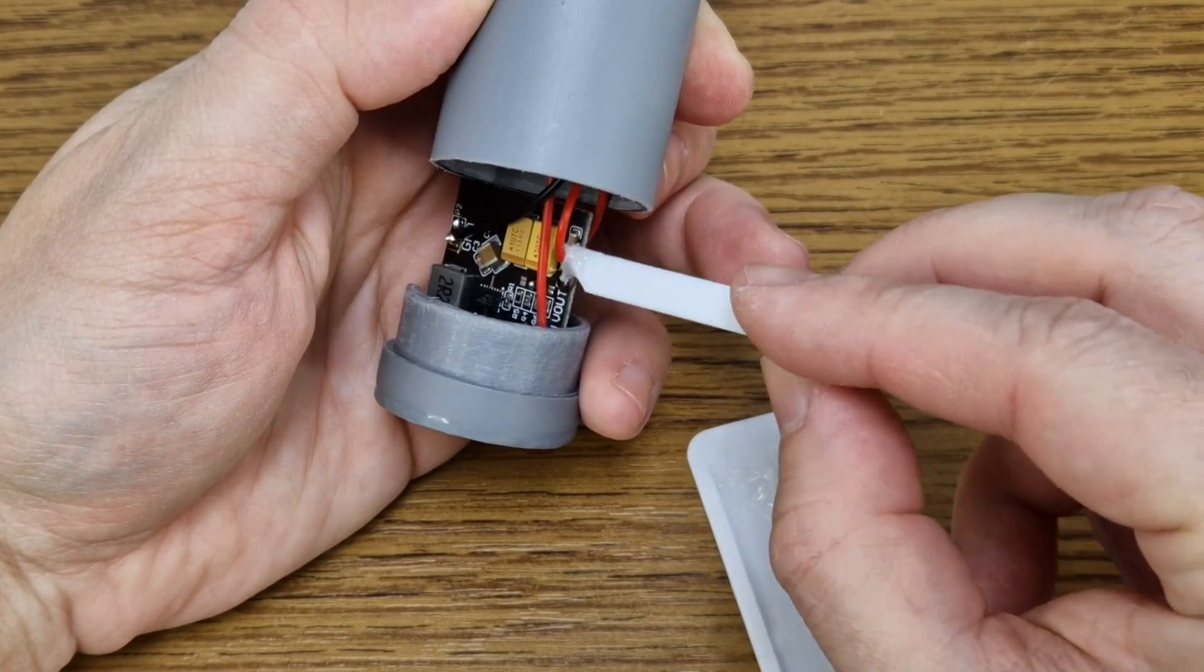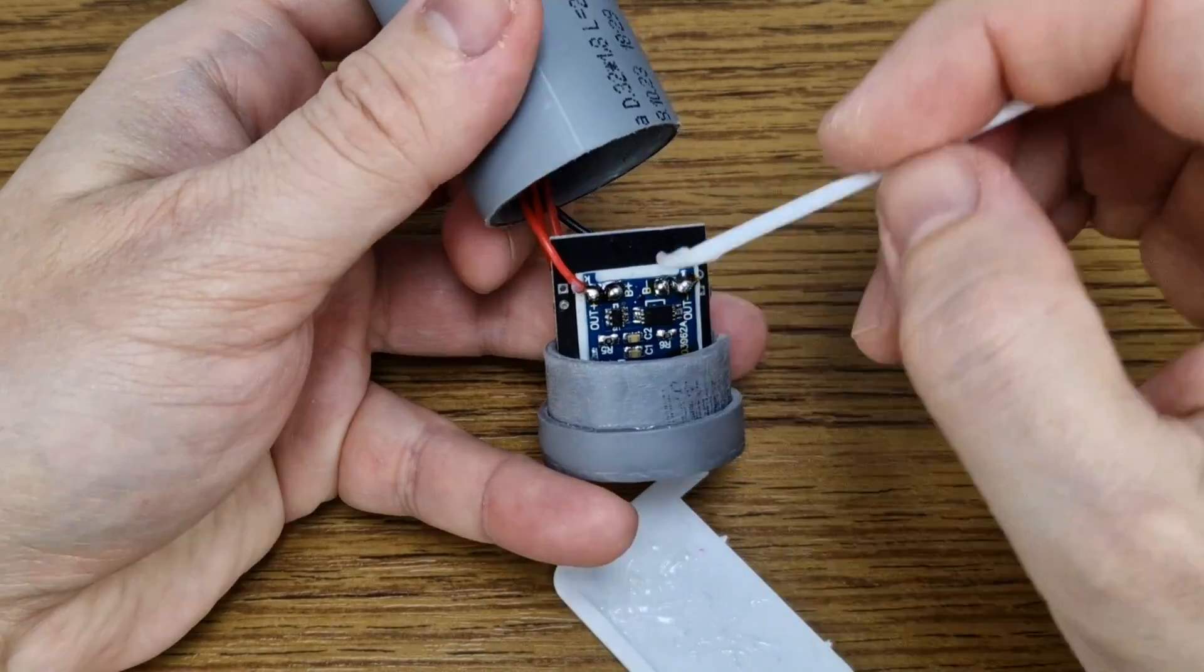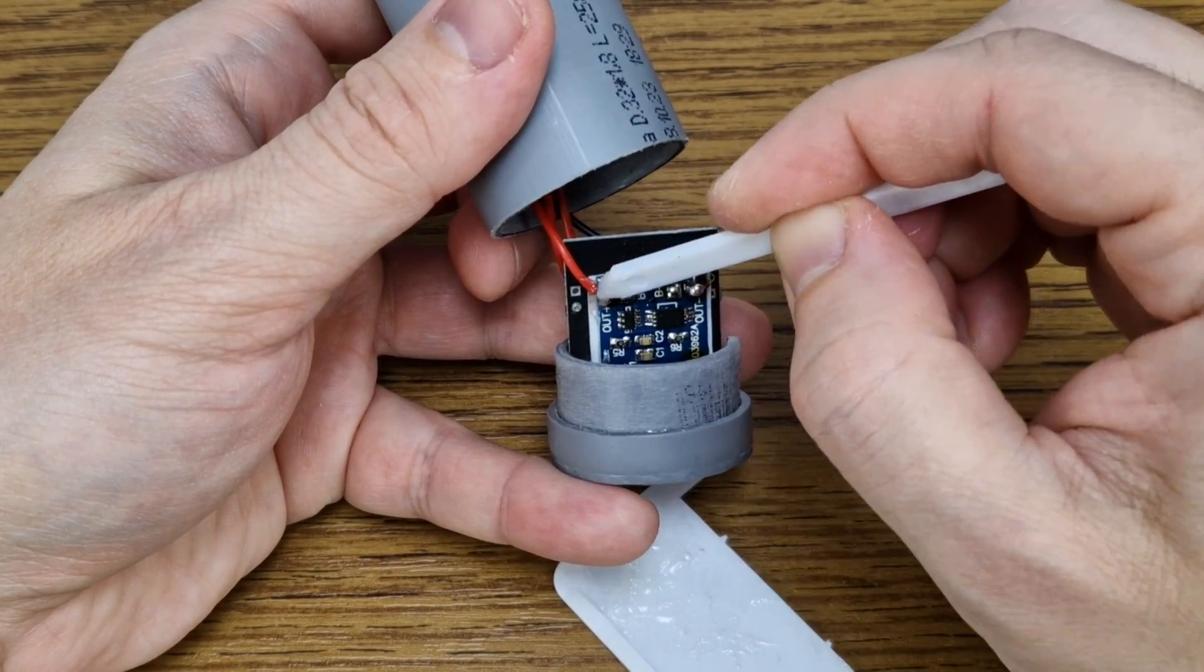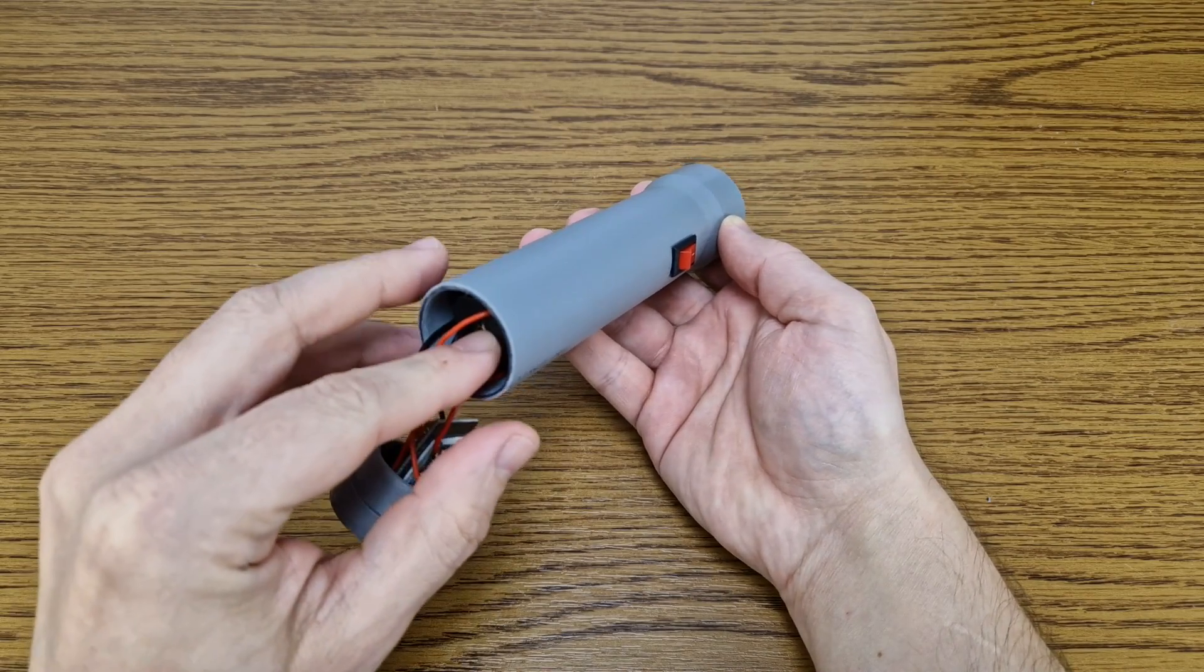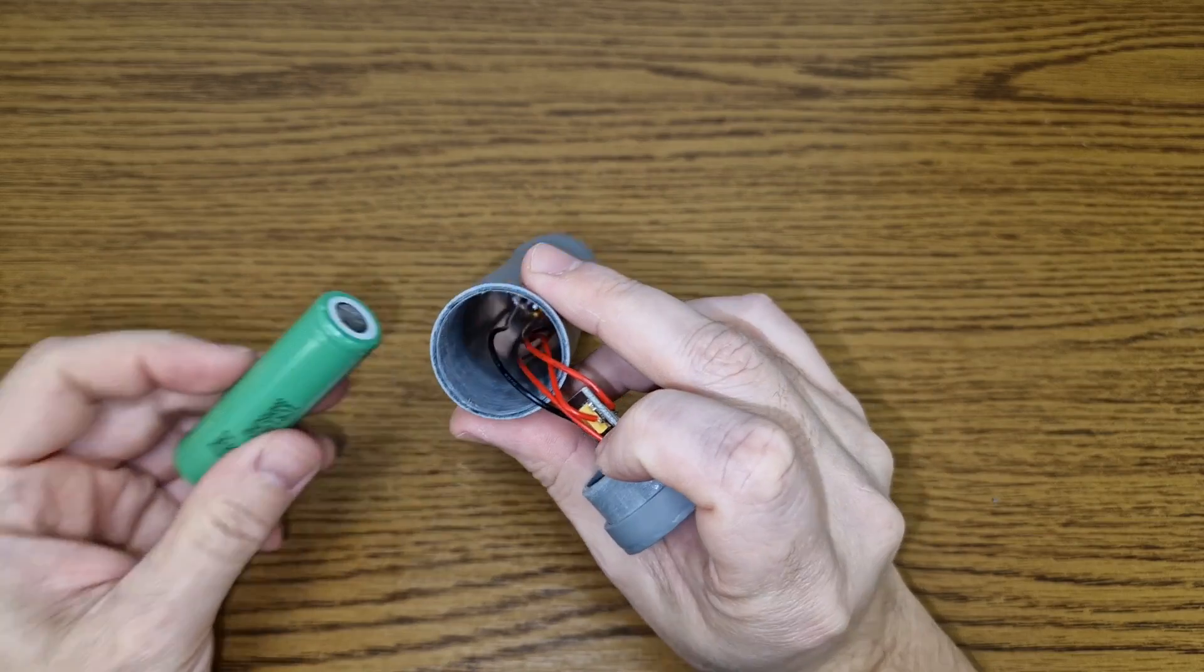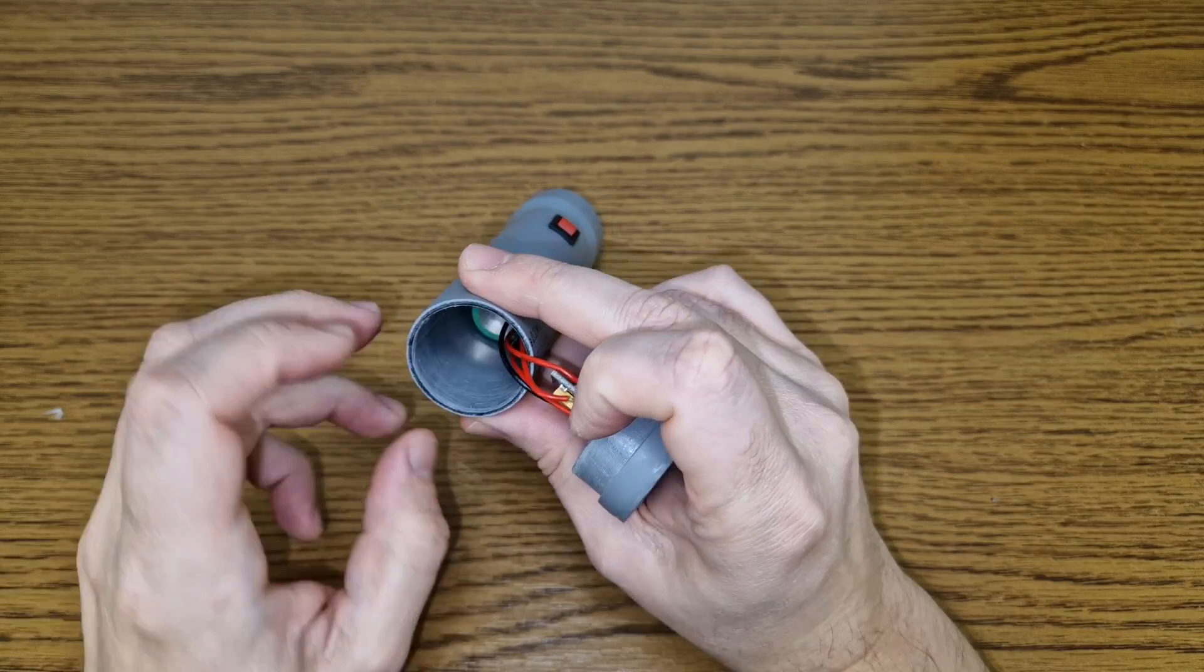I'll add some adhesive on all the wire joints to protect them. You can also use hot glue for this. At first I wanted to use an 18650 battery holder, but it doesn't fit. So I will solder a lithium ion cell directly.